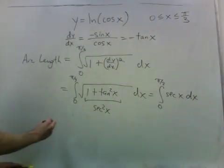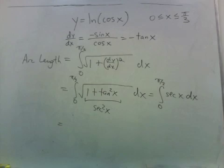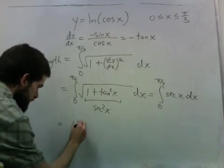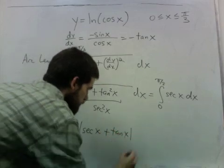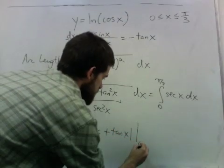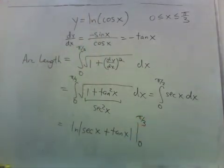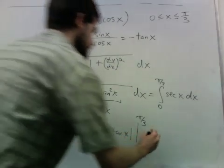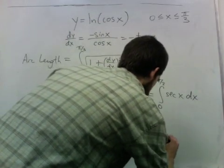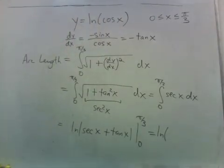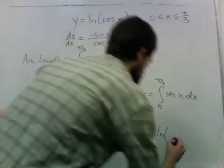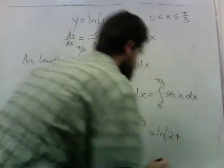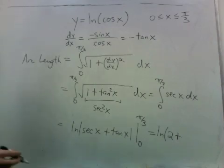If you recall, an antiderivative of secant is natural log secant plus tangent. And we're evaluating this from 0 to pi over 3. Let's see. Secant of pi over 3 is just 2. Tangent of pi over 3 is the square root of 3.